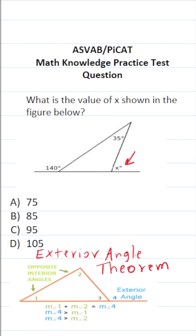It sounds complicated, but it's actually pretty easy to understand. The exterior angle theorem says the sum of the two non-adjacent angles to the exterior angle equal the exterior angle. So the measure of angle 1 plus the measure of angle 2 equals the measure of angle 4, as you can see right here.